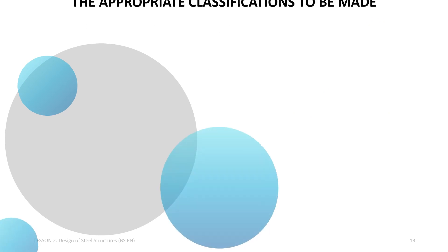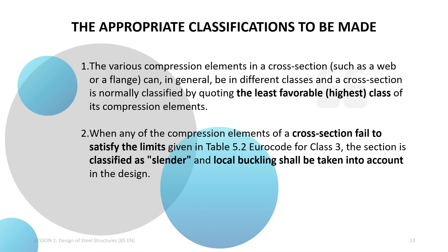The various compression elements in a cross section, such as a web or a flange, can in general be in different classes. A cross section is normally classified by quoting the least favorable — that is, the highest class — of its compression elements. When any of the compression elements of a cross section fail to satisfy the limits given in Table 5.2 of Eurocode 3 for Class 3, the section is classified as slender and local buckling shall be taken into account in the design.